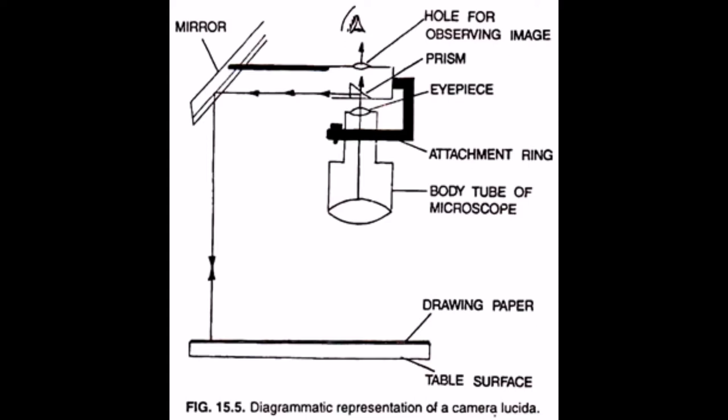The prism rests just above the eyepiece when the instrument is attached with the microscope. The observer now views the image of the object under the microscope through the prism which reflects the image horizontally onto the plane mirror.